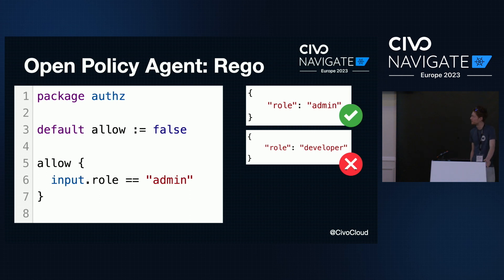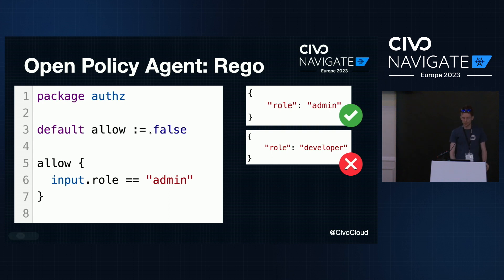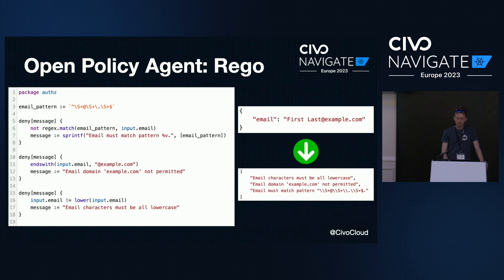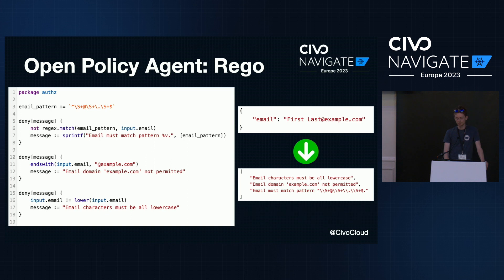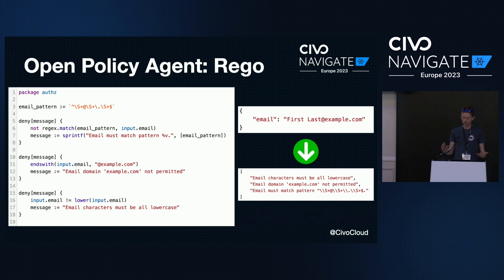Here's a very simple policy — about the most simple I could come up with. This policy grants access if the role specified in the input data is admin. We have a default allow false, but allow evaluates to true if input.role is admin. That's a trivial policy you could write in any language. Much the same applies here, though Rego can be a nice way to describe things like email validation — using regular expressions, denying certain substrings, and producing output around emails in a standard way.